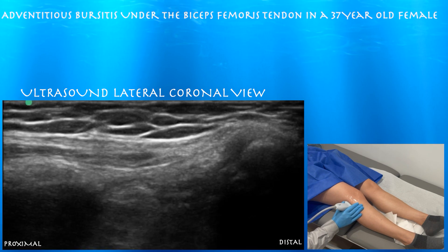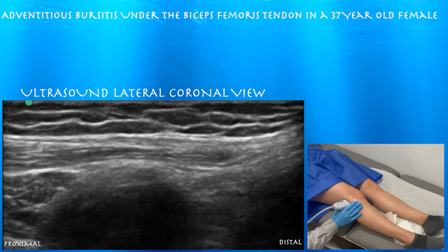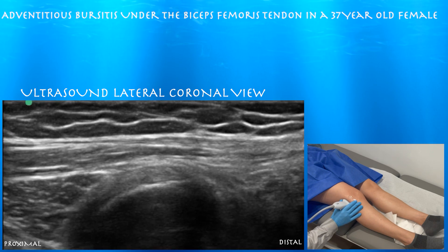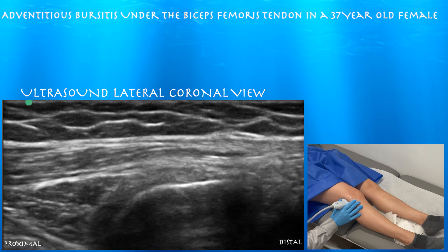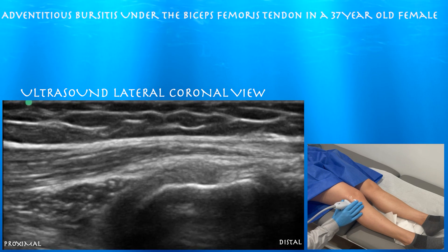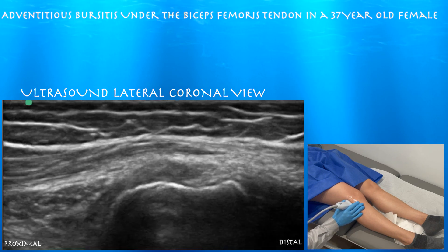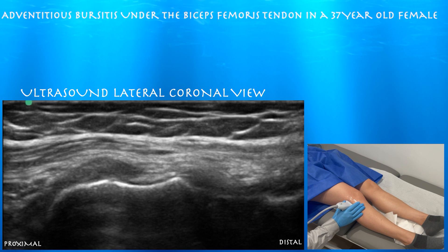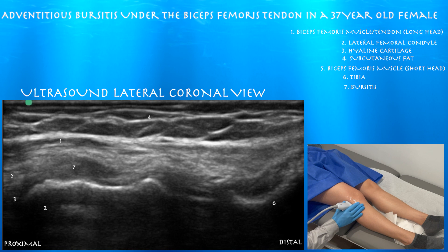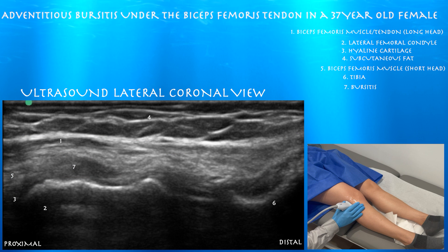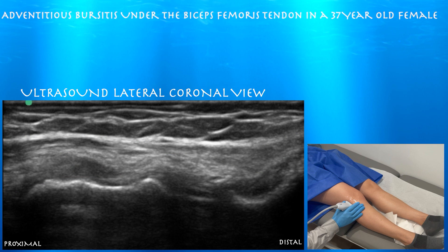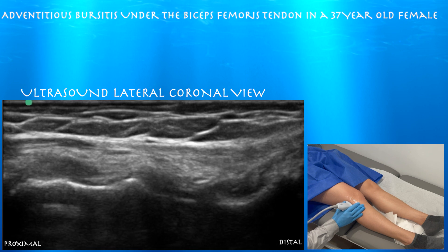Here we're going approximately again. We can see a nice-looking biceps femoris muscle basically feeding into the tendon. As the tendon goes distally, it splays over the fibula head — most of its anterior and posterior aspects — which is why you can see some broadening of the tendon distally here in this image.